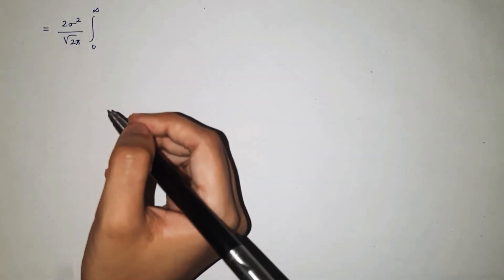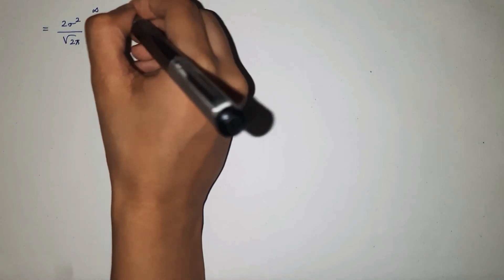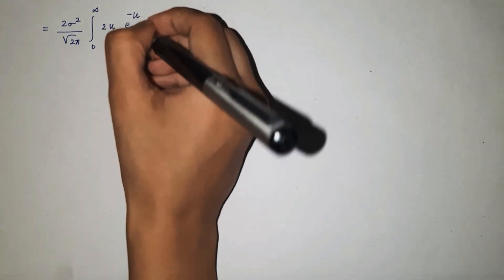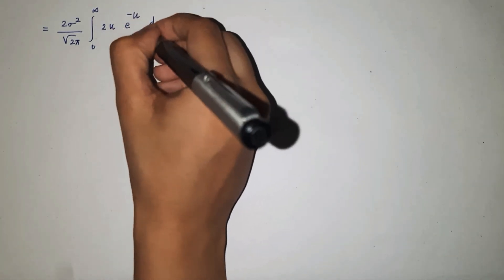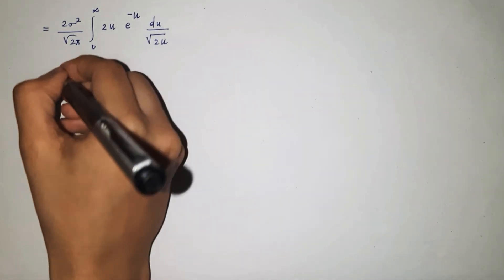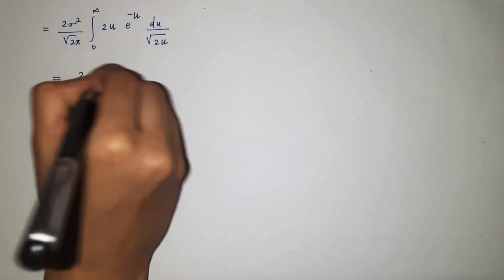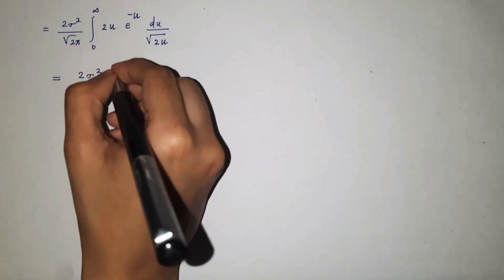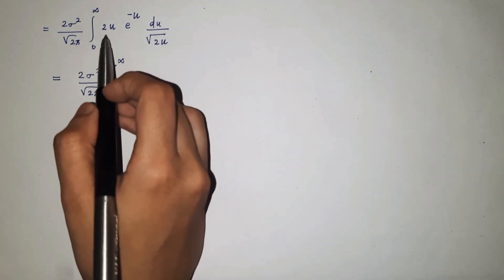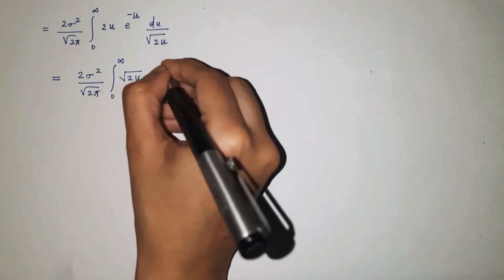Applying the substitution: z squared equals 2u, and e raised to minus z squared over 2 can be written as e raised to minus u. Also dz can be written as du divided by root 2u. Substituting, we get 2 sigma squared divided by root 2 pi, integrated from 0 to infinity, with root 2u times e raised to minus u, and the root 2u terms cancel, leaving e raised to minus u du.